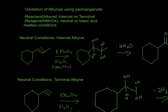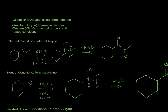First: neutral conditions with an internal alkyne. The first thing that happens is two OH's form at each end of the triple bond. Since it's in water, water adds a hydrogen to each side. Water is a good leaving group, so both water molecules leave, forming two carbocations. Then double bonds form because that's more stable — the hydrogens are still present at this stage.